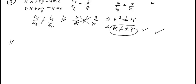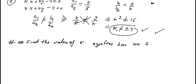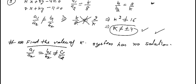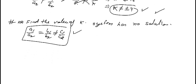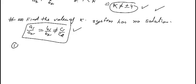Now let us take another question: find the value of K for which the system has no solution. For no solution, the condition is A1/A2 equals B1/B2, but not equal to C1/C2. The question gives: 4X plus 5Y equals 17, and KX plus 15Y equals 33.